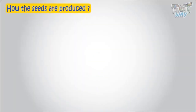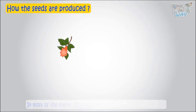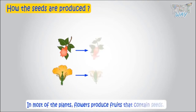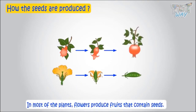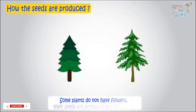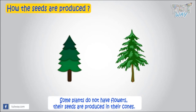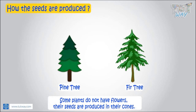Let's see how this seed is produced. In most plants, flowers produce fruits that contain seeds. But some plants that do produce seeds do not have flowers. Some trees, like pine and fir, do not have flowers — their seeds are produced in their cones.